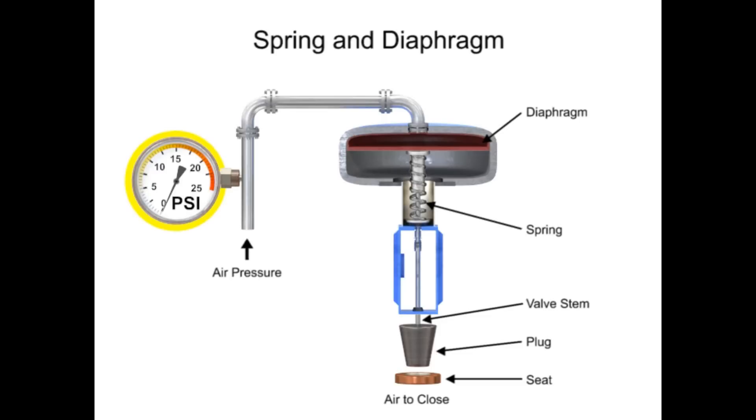A 15 psi pneumatic signal enters the housing at the top of the actuator. As pressure is exerted on the diaphragm, a downward force is applied against the spring which moves the restrictor. The diaphragm moves until it creates an equal but opposing force against the spring, at which time the motion stops as the plug meets the valve seat.